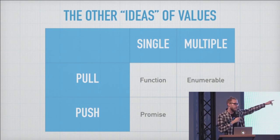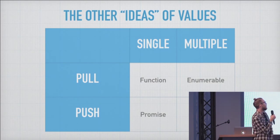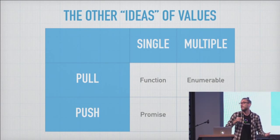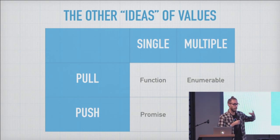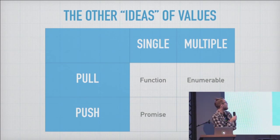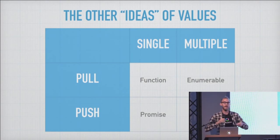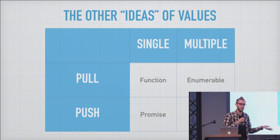I like to think about it in terms of pull versus push. These concepts relate to who's consuming one of these ideas of values. If you're a function or an enumerable and you're the consumer, you're going to pull the value — you get to decide when you want it; you can do a for loop over it. But with a promise or observable, it's actually inverted: the observable decides when the consumer receives a value, and the consumer doesn't really have any choice.